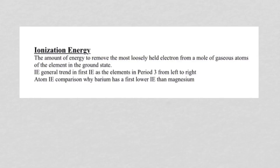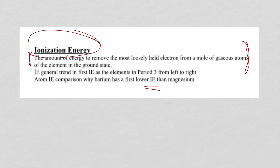Number six of seven: ionization energy, abbreviated IE. Remember the definition, because it has shown up on more than one past Regents exam. Ionization energy is the amount of energy needed to remove the most loosely held electron — the outermost or valence electron — from a mole of gaseous atoms of an element in the ground state. Ionization energy deals with removing a valence electron from an atom, resulting in an ion.